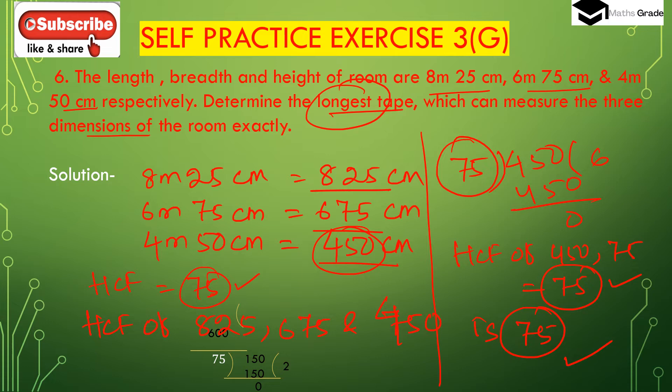So the longest step that can measure the three dimensions of the room exactly is 75 cm. The highest common factor is 75 cm.